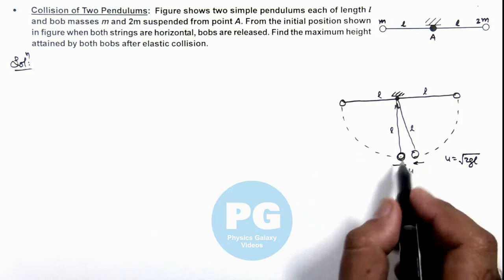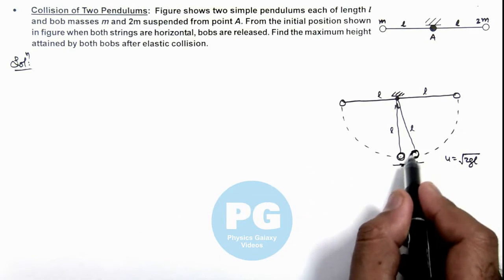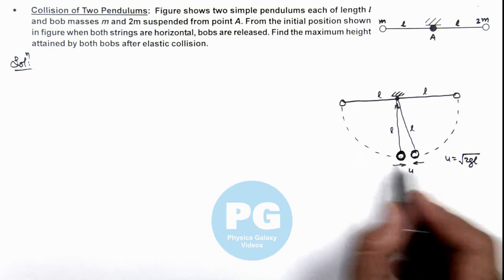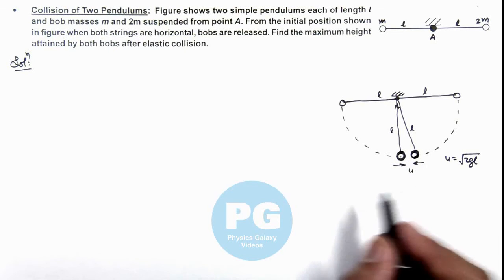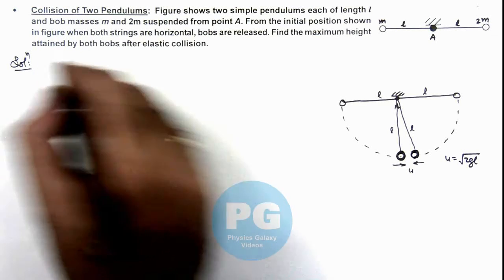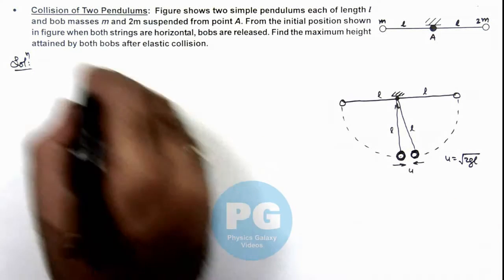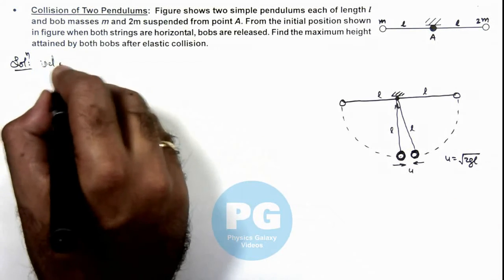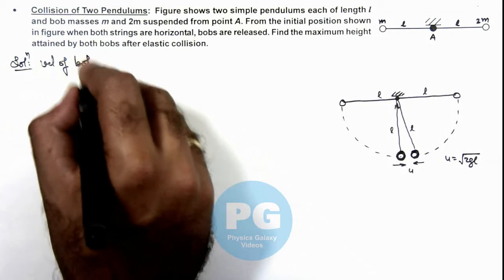Now in this situation, as the two masses are different for the bobs, the final velocity after collision would be different. We can calculate and also write vectorially the velocities of bobs.